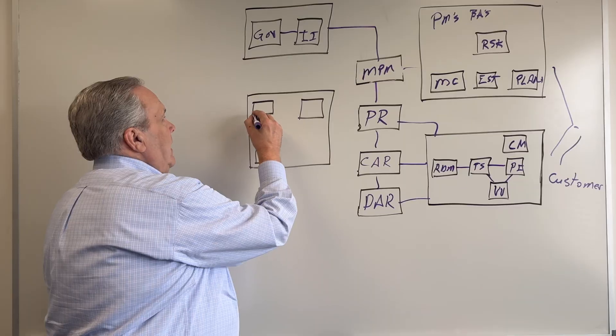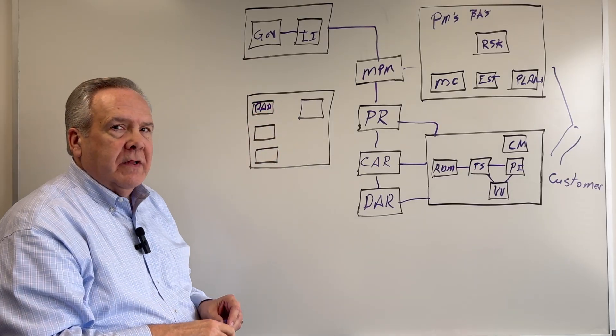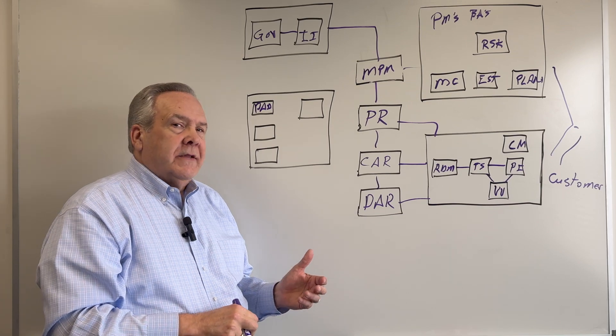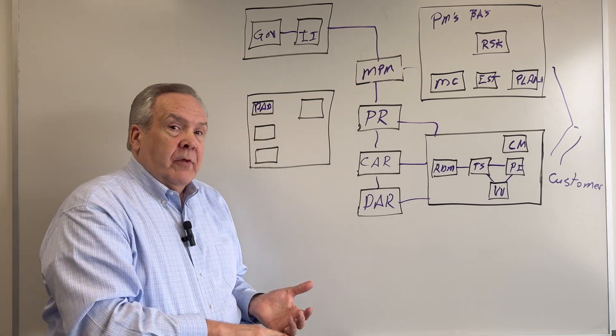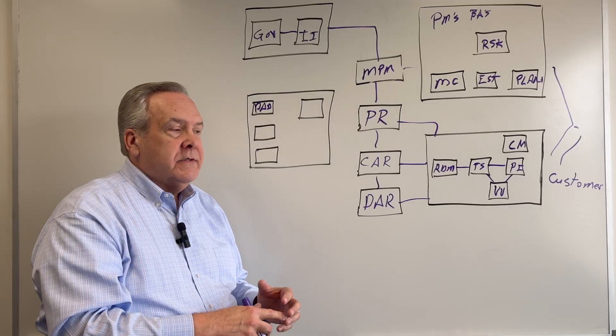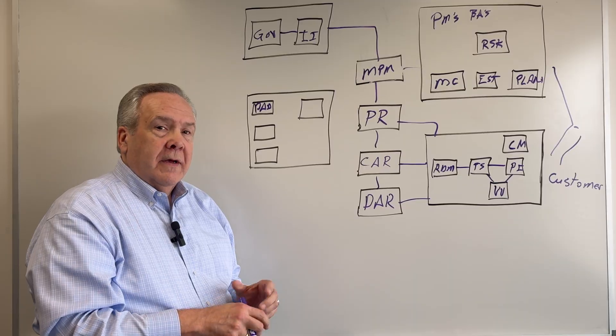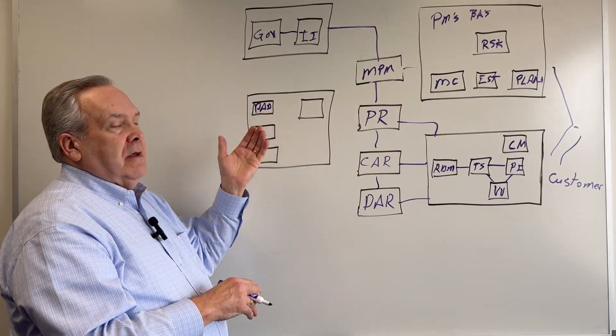This last section is PAD, stands for process asset development. And on the PAD side, this is where we develop the processes. We develop a swim lane, put in the process descriptions. There may be templates that go in these other artifacts that have to be captured or used. This is in the PAD area.